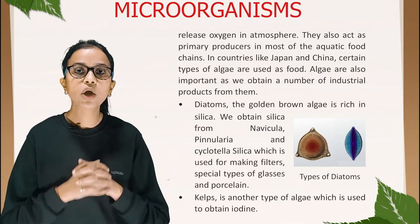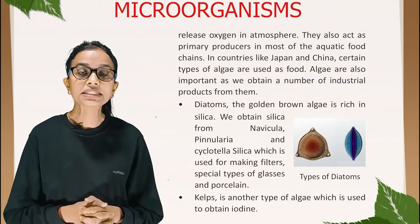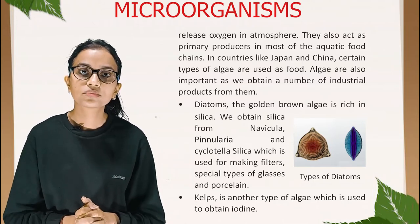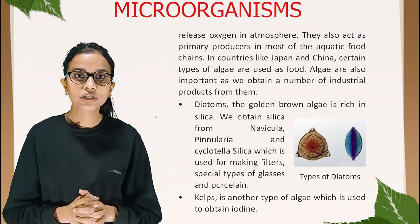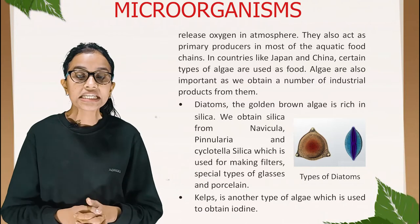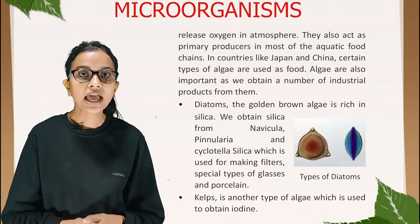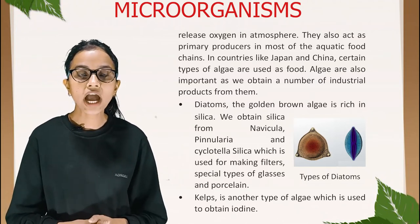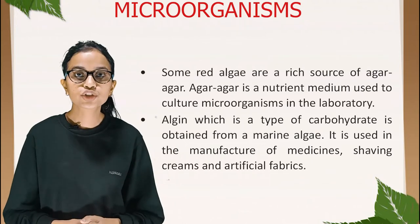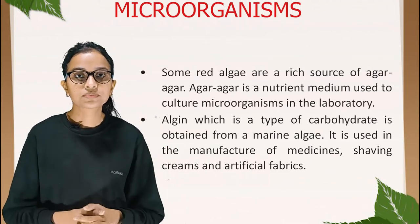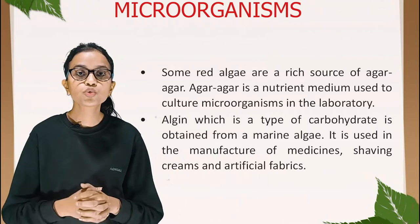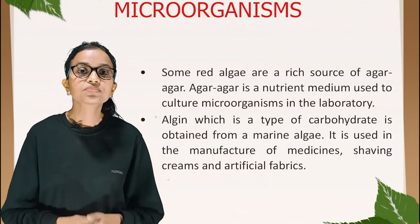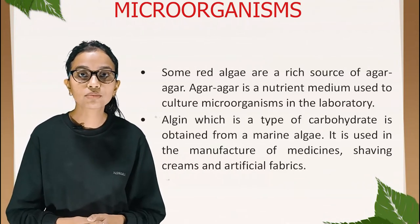Diatoms: the golden-brown algae are rich in silica. We obtain silica from Navicula, Pinnularia, and Cyclotella, which is used for making filters, special types of glass, and porcelain. Kelp is another type of algae used to obtain iodine. Some red algae are a rich source of agar-agar, which is a nutrient medium used to culture microorganisms in the laboratory. Algine, a type of carbohydrate, is obtained from marine algae.